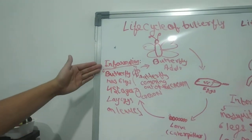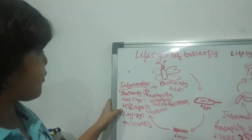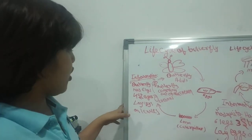Yeah, okay. And the information about that, butterfly has six legs and four stages, and they lay eggs on the leaves.